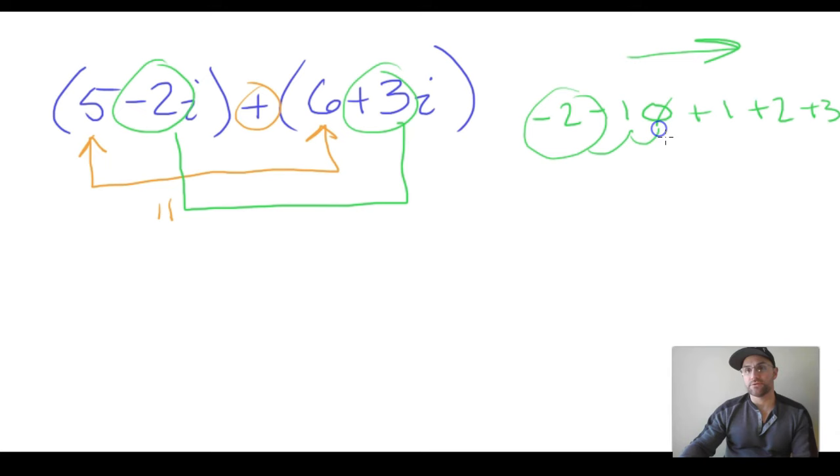Positive 1i. We can omit the 1 because that's simply a coefficient. So we have 11 plus i as our final answer. And what's a coefficient?